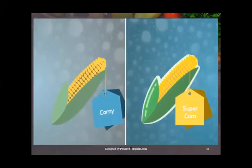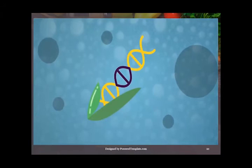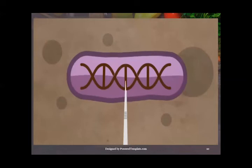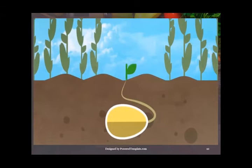GMOs are living organisms whose genetic material is artificially manipulated. This creates combinations of plant, animal, bacteria, and virus genes that do not occur in nature. For example, scientists are able to take a soil bacteria, remove its gene which produces a protein that's toxic only for caterpillars, and incorporate it into the chromosomes of corn. The technology enables us to increase our food production and make it more efficient.